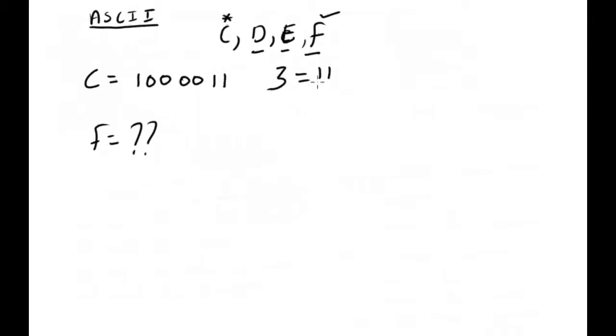So after I convert 3, I get 11. Now what I need to do, I need to add 3 to this and it will give me F. So I say 1000011 plus 11.